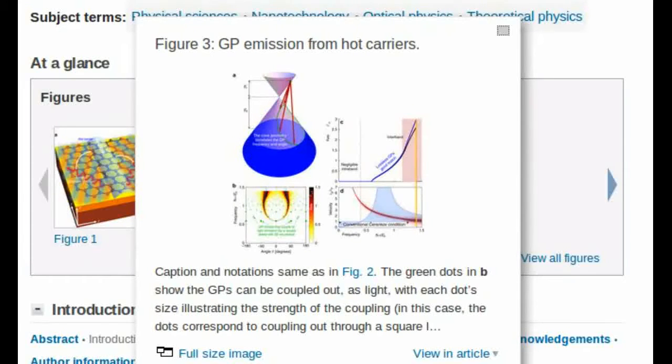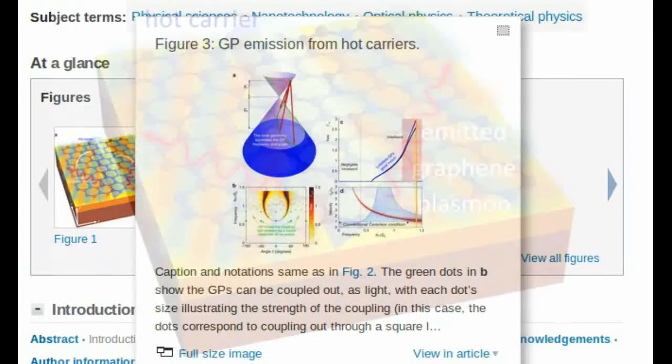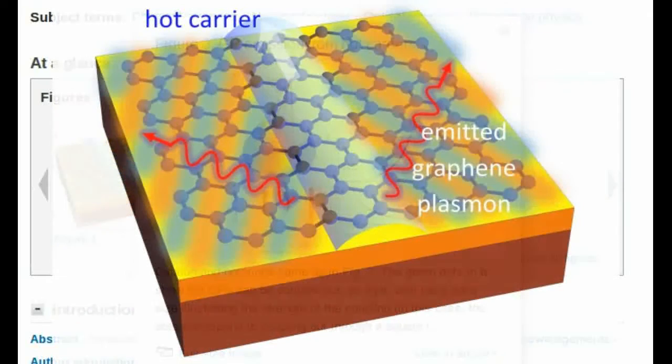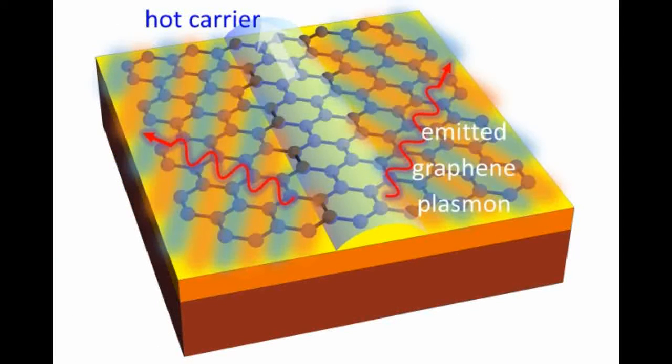That meant the two speeds were similar enough that significant interactions might occur between the two kinds of particles if the material could be tuned to get the velocities to match. That combination of properties—slowing down light and allowing electrons to move very fast—is one of the unusual properties of graphene.